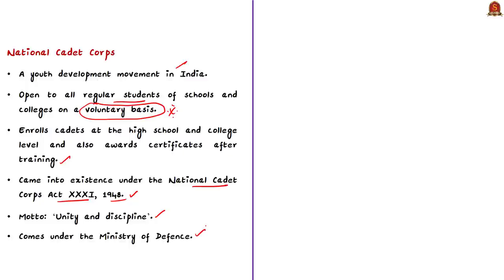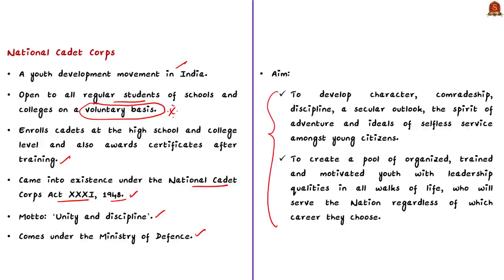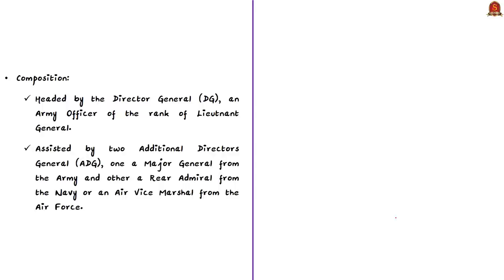One of the aims of NCC is to create a pool of organized, trained and motivated youth with leadership qualities in all walks of life. Coming to the composition of NCC, it is headed by the Director General, who is an Army officer of the rank of Lieutenant General. He is assisted by two Additional Directors General — one a Major General from the Indian Army and other a Rear Admiral from the Indian Navy or an Air Vice Marshal from the Indian Air Force.